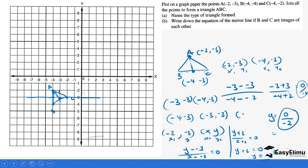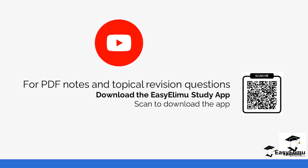That brings us to the end. We used the knowledge of writing equations of lines using one or two points. In this case we used two points and found gradient 0. Regardless of the point picked along the line, the gradient is always 0. So we picked (−2, −3), introduced an unknown, set (y minus −3) over (x minus −2) equals 0, and got y equals −3. That's in the form y equals mx plus c where m equals 0. You can check out more revision questions and notes on the app. See you in the next lesson.